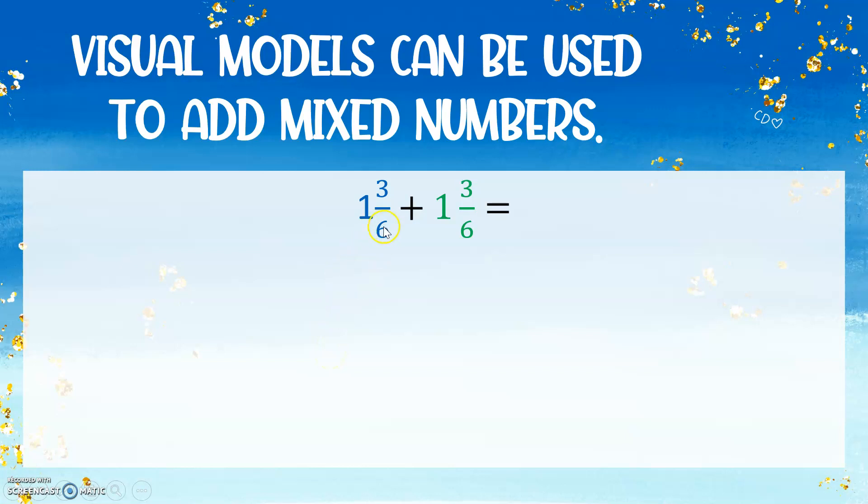That whole will be split into six parts because our denominator is six, but we still have the whole thing shaded. So we have our one whole, so that takes care of the 1. Now we have to model the 3 sixths, so I'm going to add another whole, and instead of shading all six parts, I'm going to be shading three parts because that is what our numerator is.